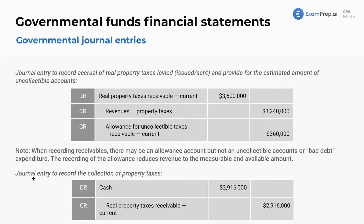What about the journal entry to record the actual collection of property taxes? Just like in corporate accounting, we debit cash and credit our receivable. In corporate accounting it's accounts receivable; here it's real property taxes receivable. The question would give you these dollar amounts — this is what it ended up being.